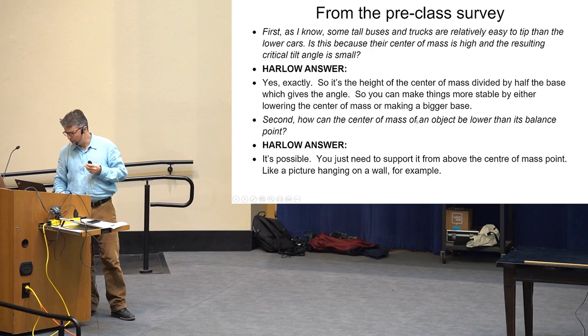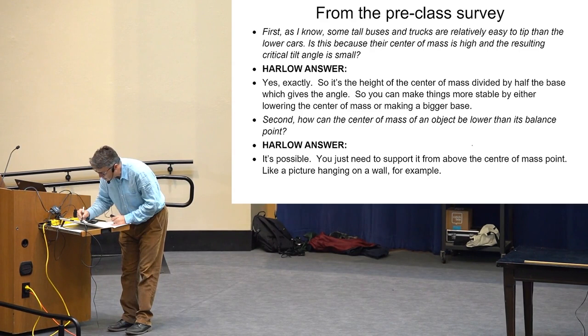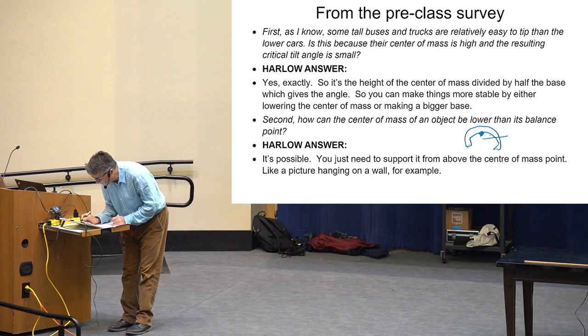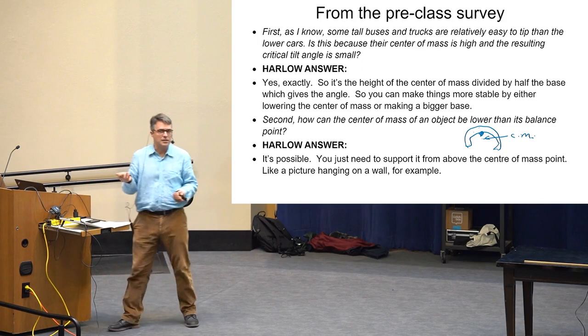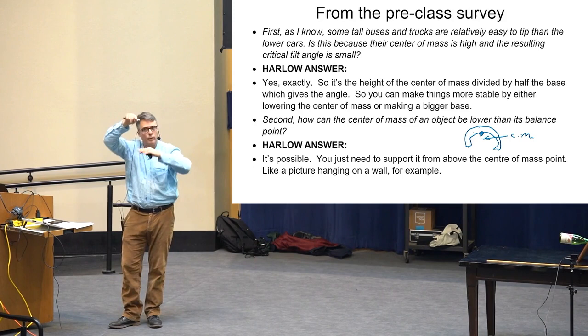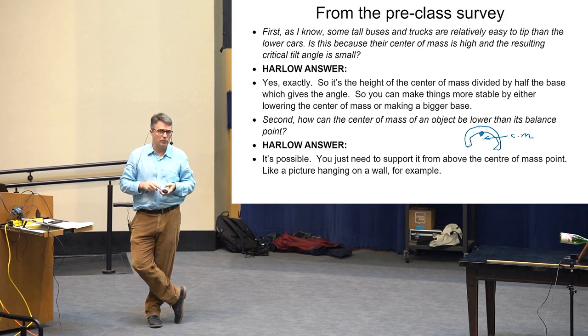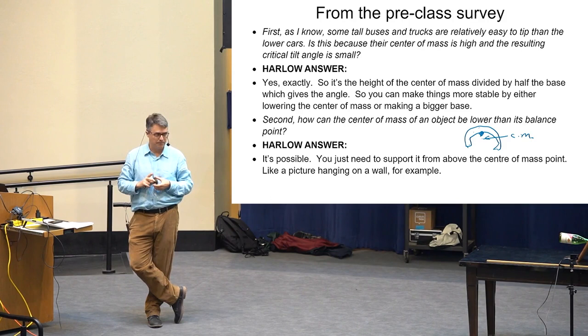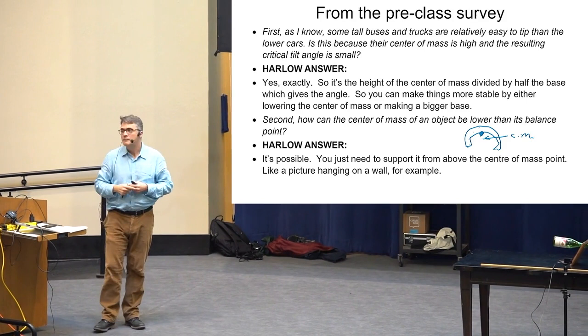Second question: how can the center of mass of an object be lower than its balance point? You could think of a horseshoe hanging on a nail — the center of mass of the whole horseshoe is below the hanging point. Or a picture hanging on a wall: the nail is at the top, the center of mass is below that support point. Anytime you support something from above, the center of mass is below the pivot point, giving it inherent stability. If you hung it from the bottom, it would just flip right over.